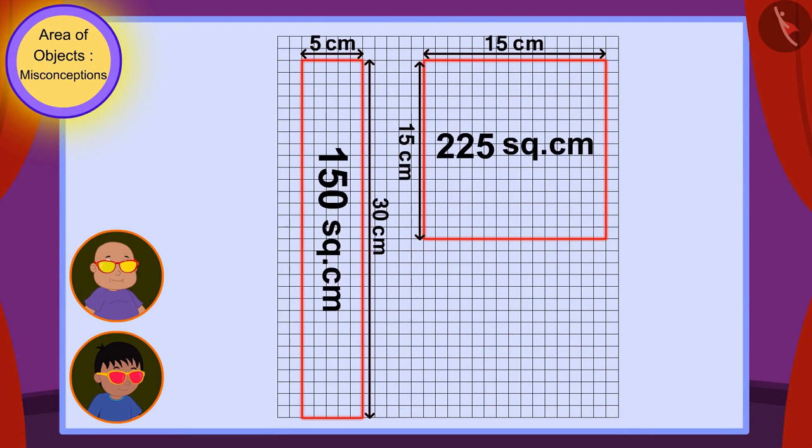Raju and Babalu also found the area of the surfaces of both tables just like you. Look Raju, the area of the rectangular table is 150 square centimeters. And the area of the square-shaped table is 225 square centimeters.